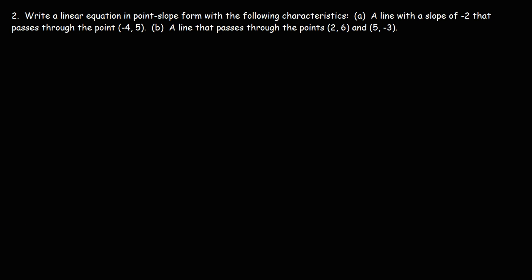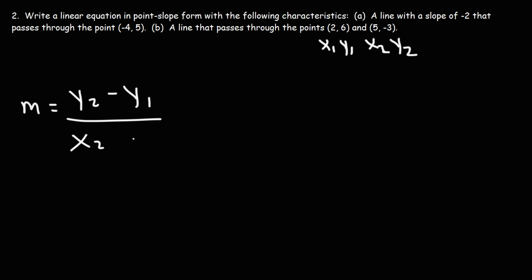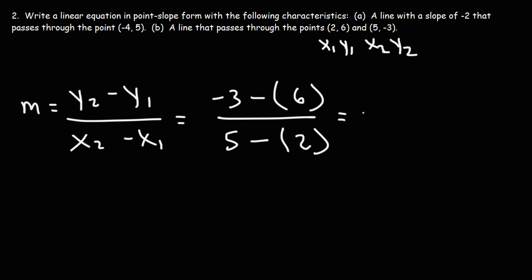Now let's move on to part B: a line that passes through the points (2, 6) and (5, negative 3). Let's call these x1, y1 and x2, y2. We don't have the slope in this problem, but we can find it using the formula m equals y2 minus y1 over x2 minus x1. So that's negative 3 minus 6 over 5 minus 2, which is negative 9 over 3, giving us a slope of negative 3.